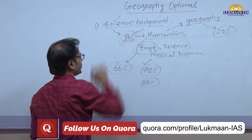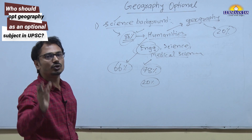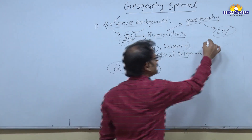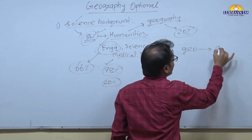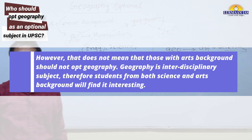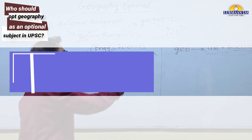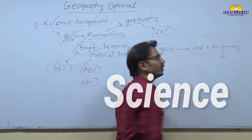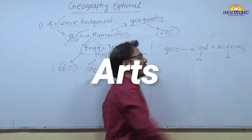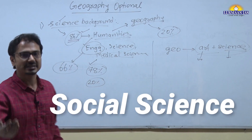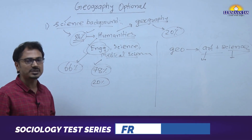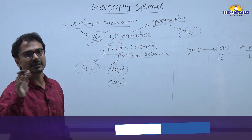This does not mean those with an arts background should not opt for geography. Geography is an interdisciplinary subject — a blend of art and science, neither pure art nor pure science. Physics, biology, and chemistry are involved, and at the same time humanities and social sciences are also part of geography. So those with a humanities or arts background will also find geography helpful.